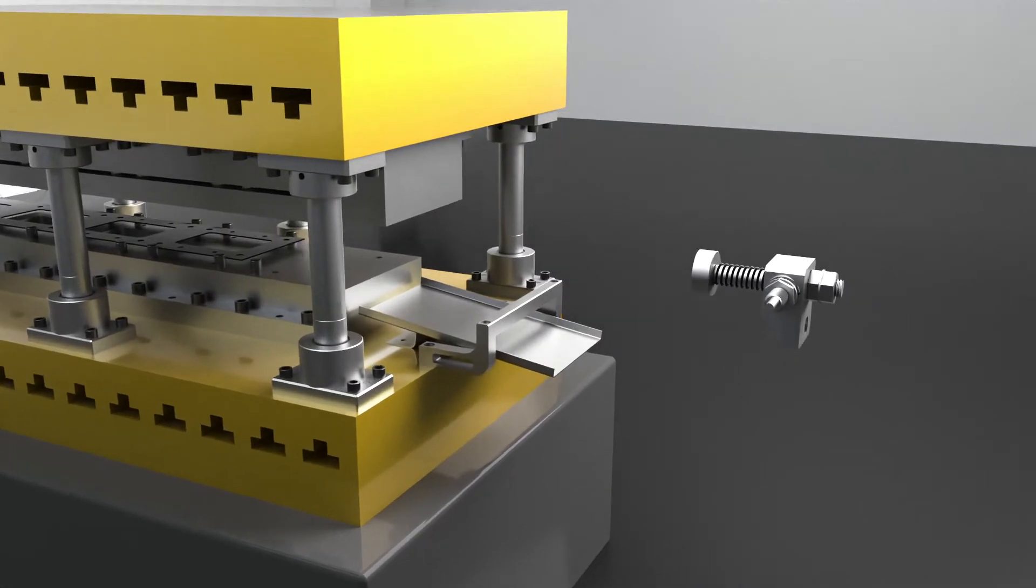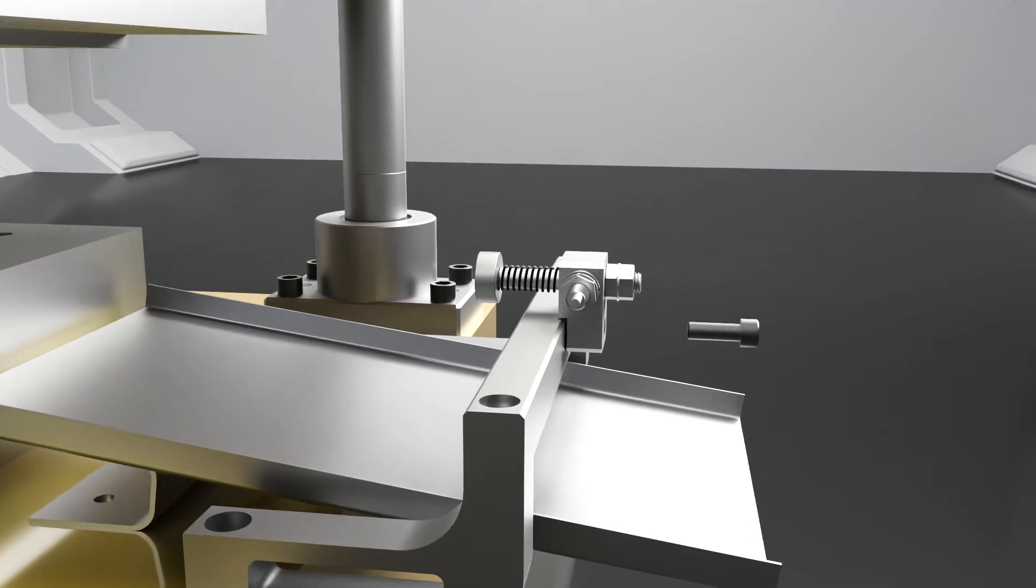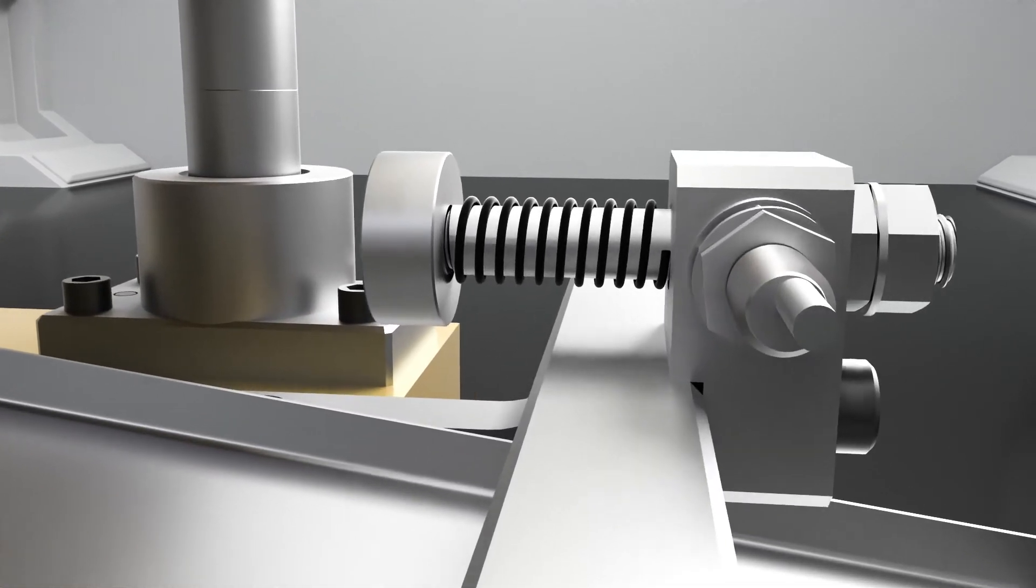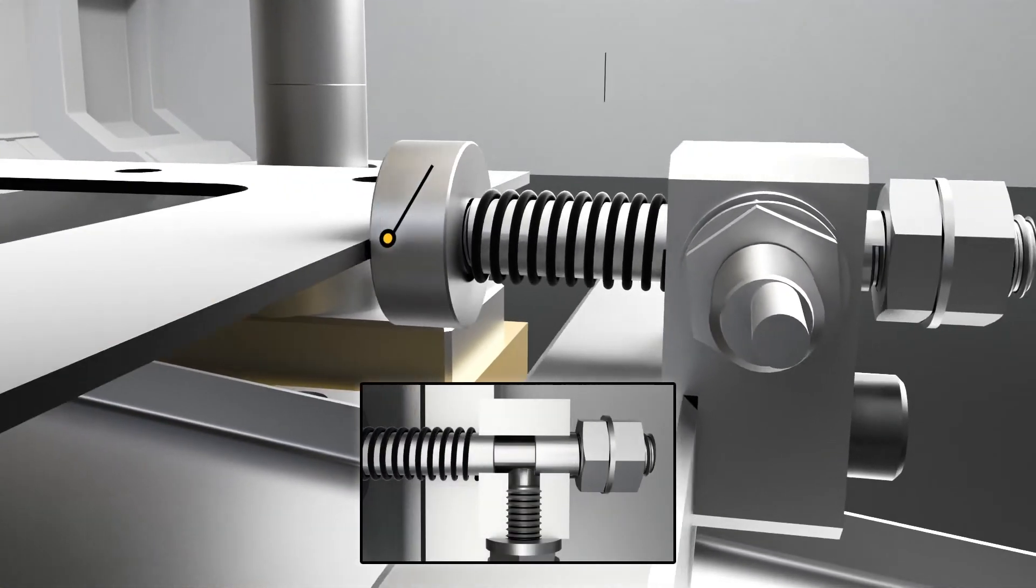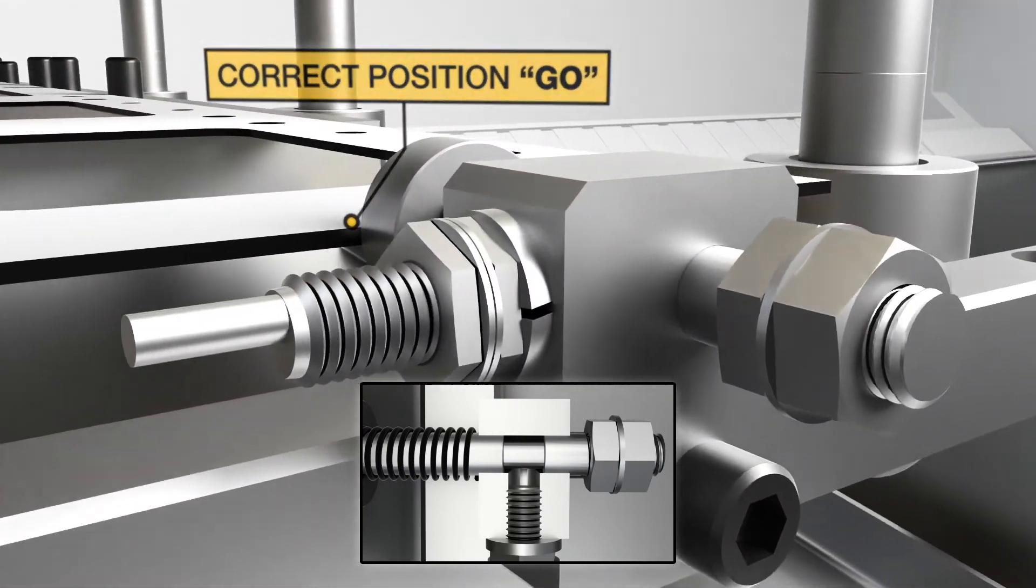The OKJB sensor can monitor specific events and, when there is a problem, it can signal the press to stop. The pushing force from the workpiece pushes the shaft in the correct position which signals go to the press.